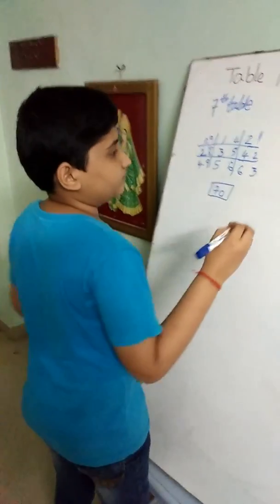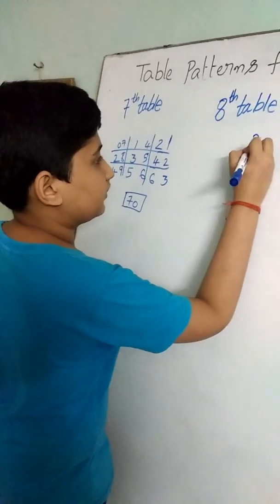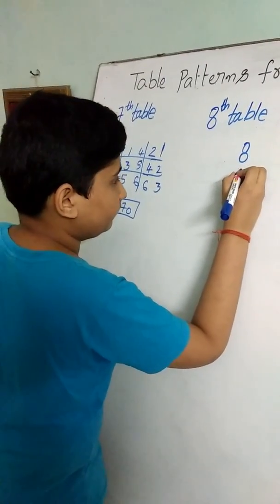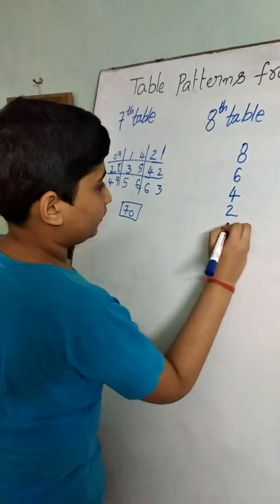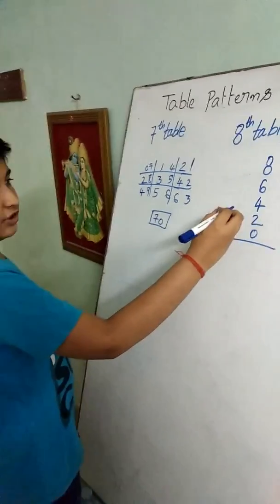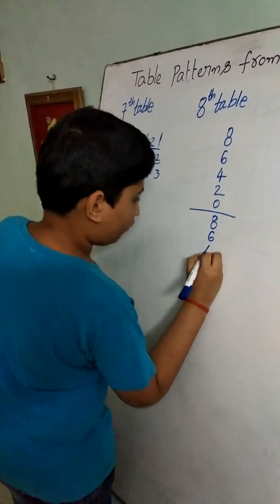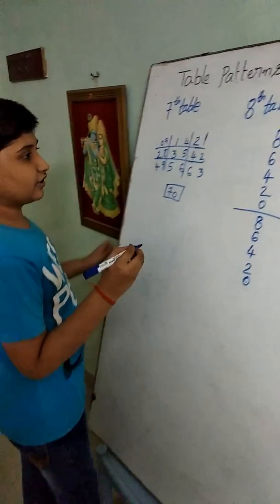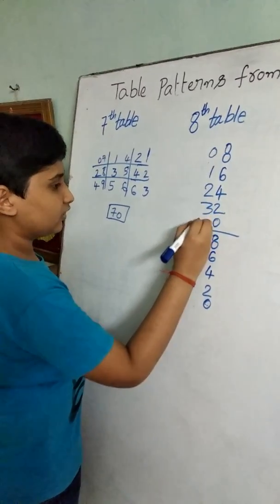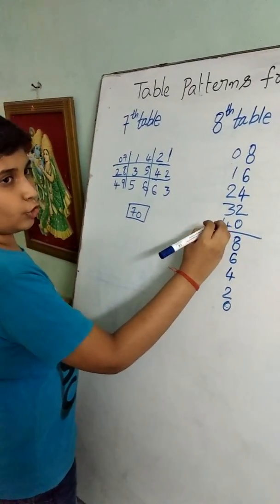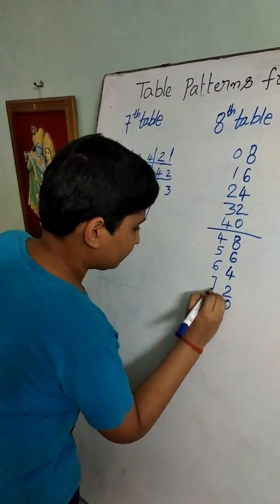We should write the even numbers in descending order: 8, 6, 4, 2, 0. And we should draw a line and write the same as it is: 8, 6, 4, 2, 0. And we should write 0 here, after 1, 2, 3, 4. Here we wrote 4, so in the second part we should write 4. After 5, 6, 7, 8.